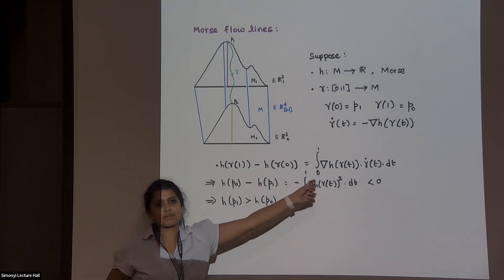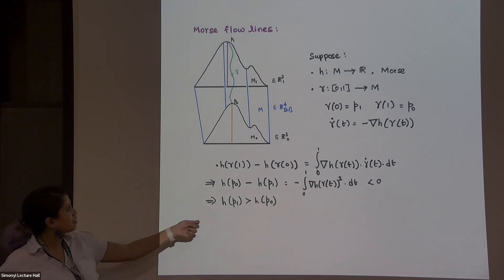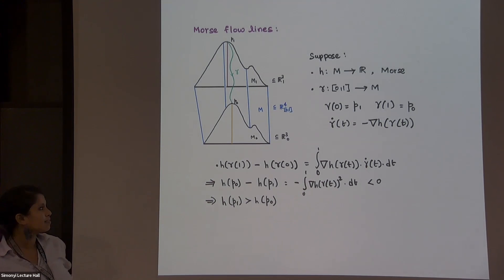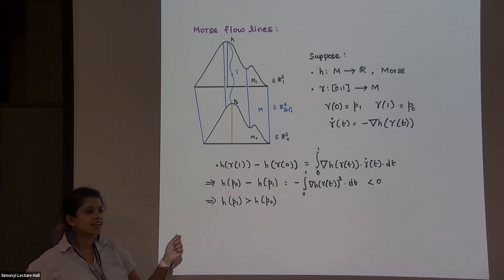So if you somehow know that this quantity is positive, then you know that the height is increasing. So moral of this slide is if you have a nice enough flowline and a nice enough function, you can show that something's increasing.